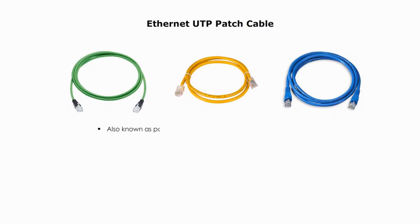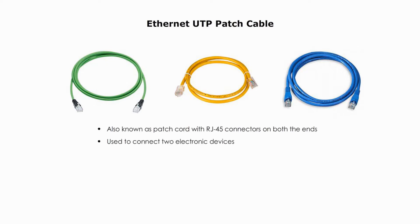Ethernet UTP patch cable, also known as patch cord, is a form of Ethernet UTP cable with RJ45 connectors on both ends. A UTP patch cable can be used to connect two electronic devices, such as connecting between a computer and network port, between a patch panel to a switch, or between a switch and a router.